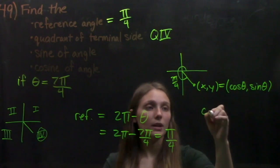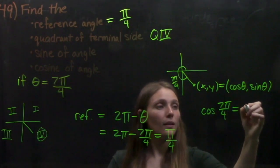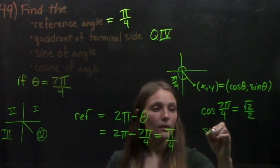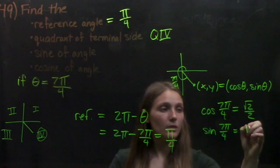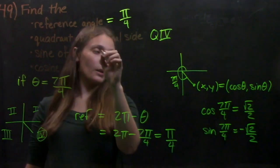So we know that the cosine of 7 pi over 4 is the square root of 2 over 2. And the sine of 7 pi over 4 equals negative root 2 over 2. And we put those right up here.